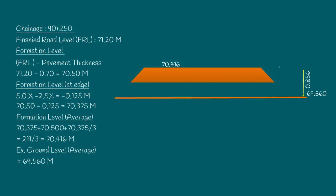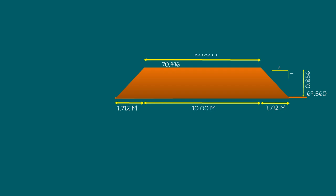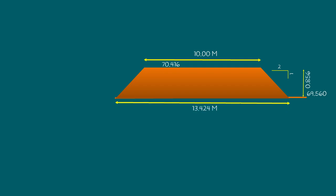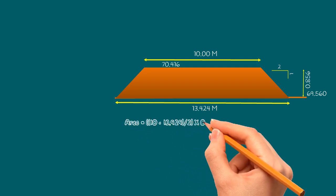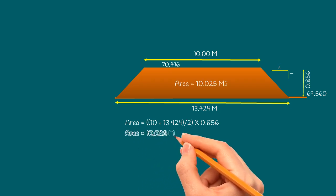Now let us draw the cross-section of the embankment with a side slope ratio of 2 to 1, and derive the bottom width and calculate the area of the embankment. The embankment height is 0.856; with slope ratio 2, the width of the slope is 1.712 meters. The total bottom width is 10 plus 1.712 plus 1.712, equals 13.424 meters. Using the trapezoidal formula: (10 plus 13.424) divided by 2, into 0.856, equals 10.025 m².